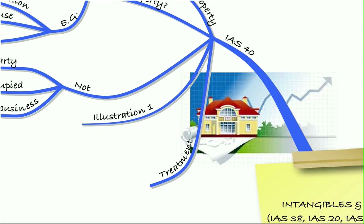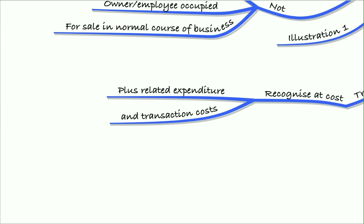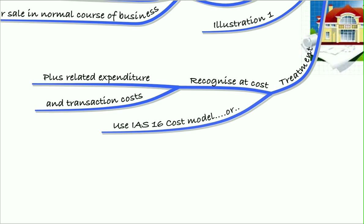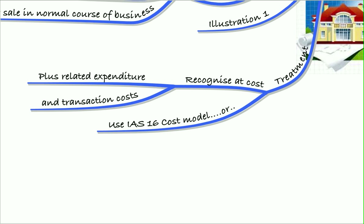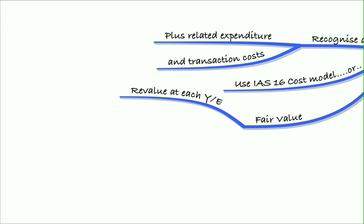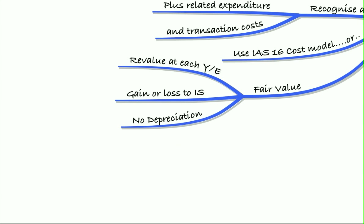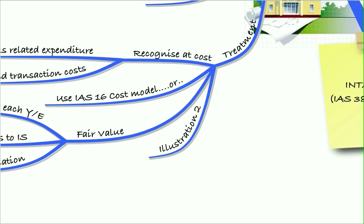We looked at illustration one to make sure we could identify these. The treatment is that we recognize them at cost plus related expenditure and transaction costs. Then we use either the IAS 16 cost model — cost less depreciation — or we hold them at fair value, revaluing at the end of each year with the gain or loss going to the income statement, not a revaluation reserve, and there's no depreciation on the asset.